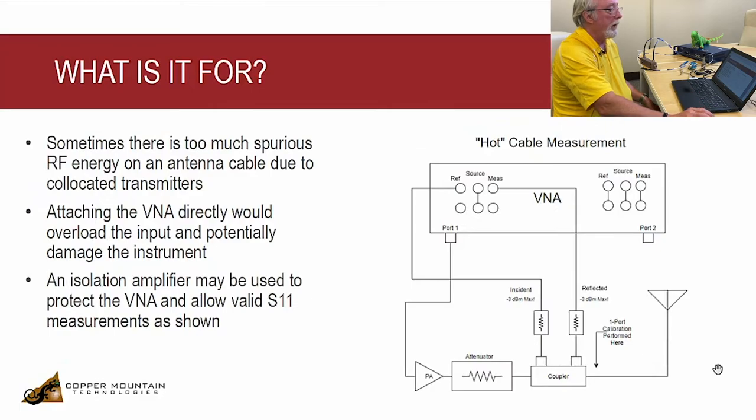The next application is a hot cable measurement. In the broadcast industry, there are large antennas, perhaps on antenna farms, and there are co-located transmitters, such that if you try to measure the signal at the end of your cable, there could be some very, very large signals coming your way from other sources. If you attach that directly to the port to the VNA, you could damage it. So you have to isolate the VNA from those hot signals, and this is how one could do it. Use port one through a power amplifier to boost the signal up, perhaps an attenuator to help protect the output of the PA from these signals. And then you go through the coupler and out to the antenna.